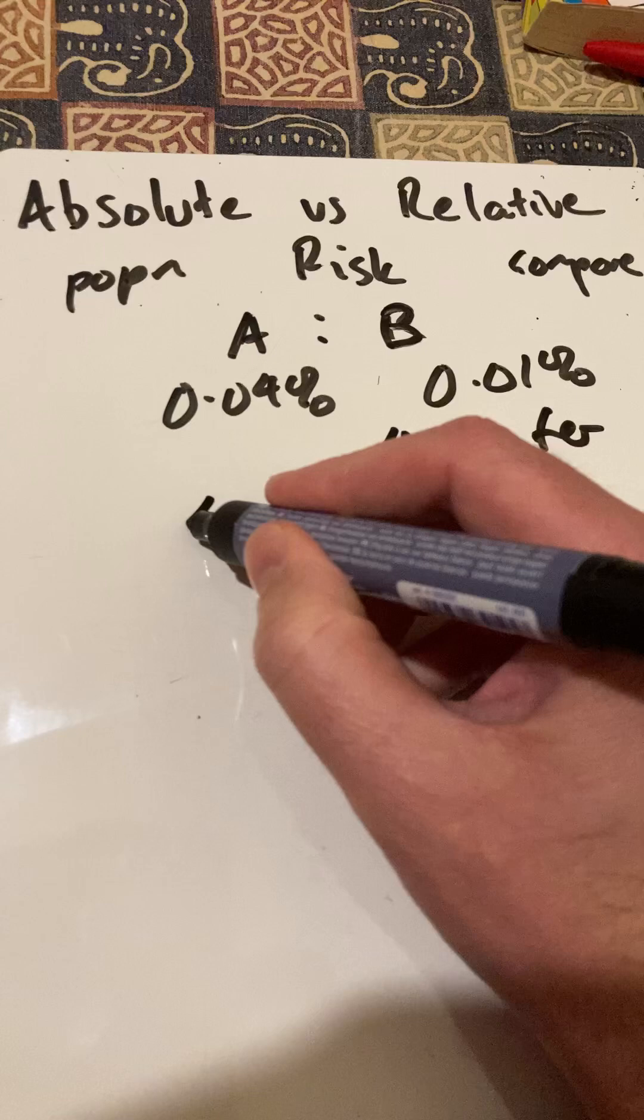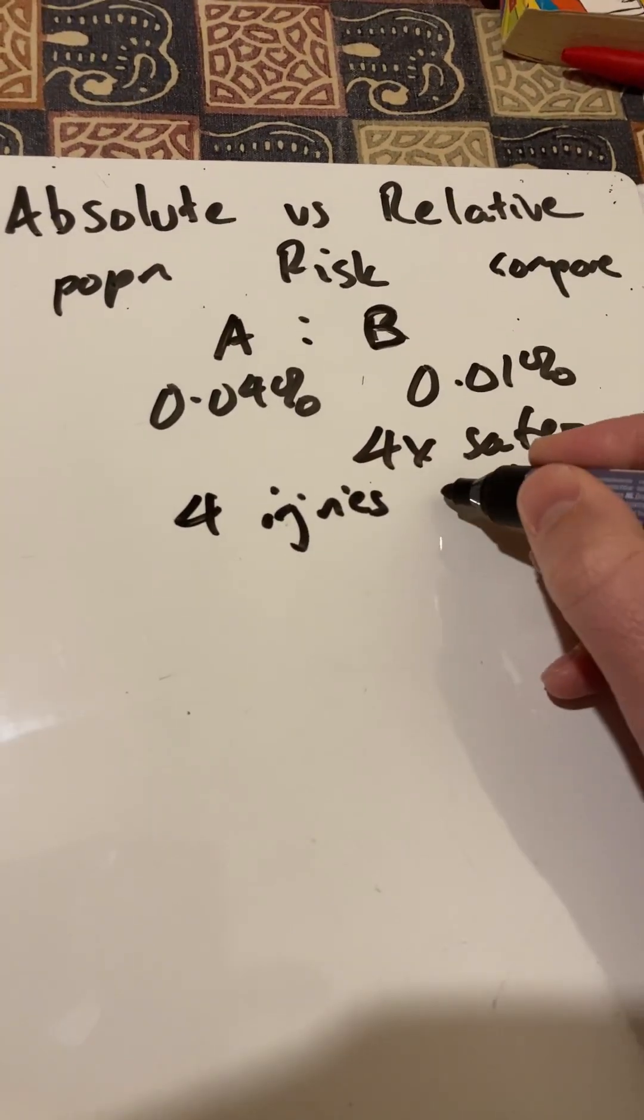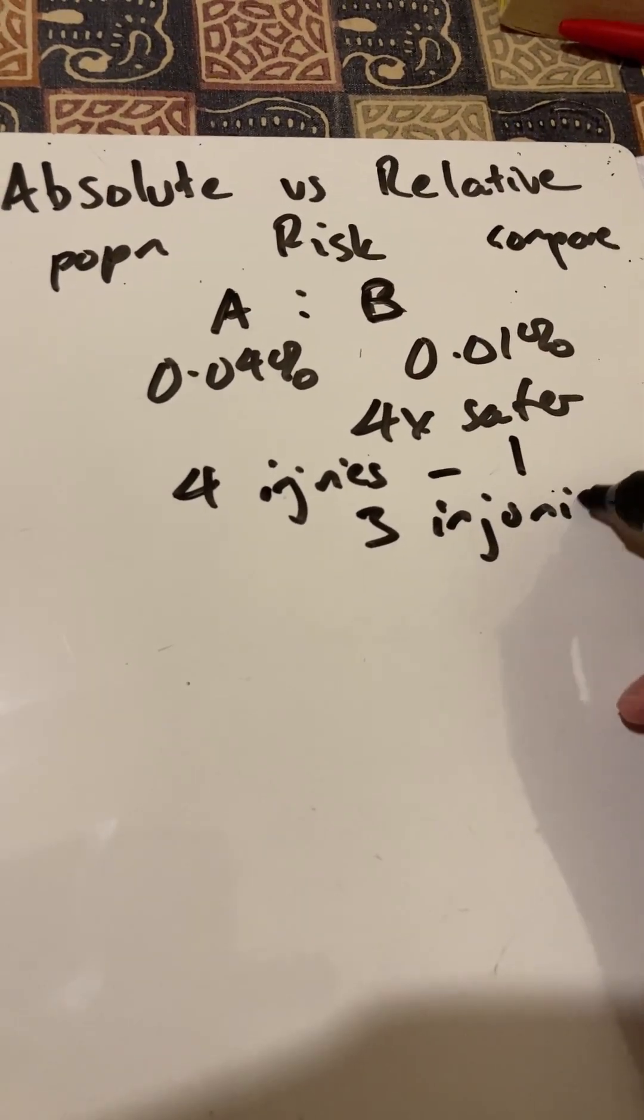A has four injuries, say, per year, B has one, so the difference there is three injuries per year.